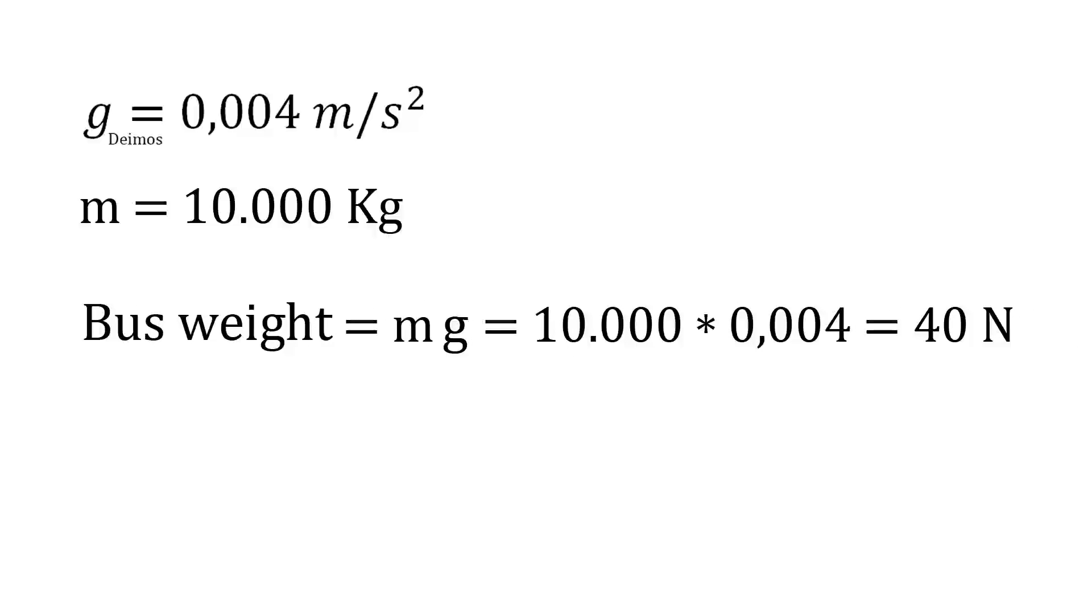Since the acceleration of gravity at Deimos is 0.004 meters per second squared and the mass of the bus is 10,000 kilograms, the force that supports our astronaut is the mass times the acceleration of gravity. This is 10,000 times 0.004 equals 40 newtons.